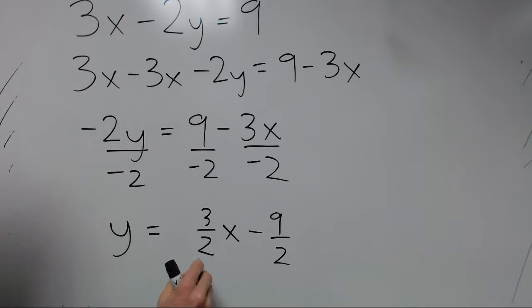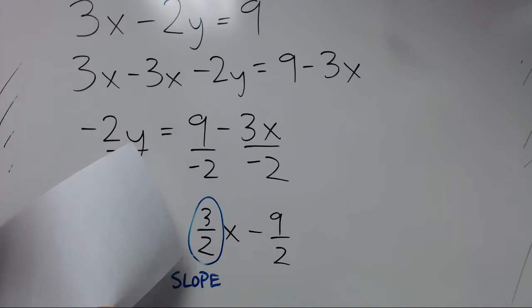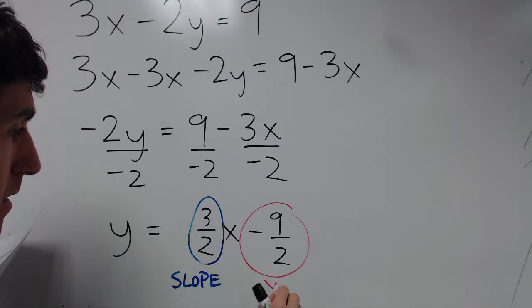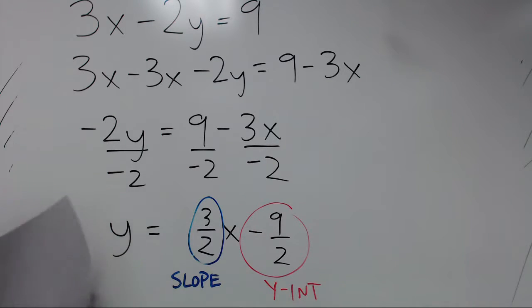So that's the equation we're going to be graphing. And that's our slope. It's 3 halves, positive 3 halves. And then we have our y-intercept as the negative 9 halves. So these numbers are pretty small. And we can end up using a regular integer scale for our graph.